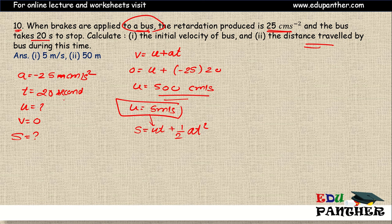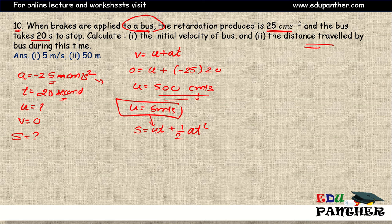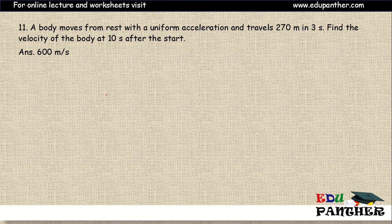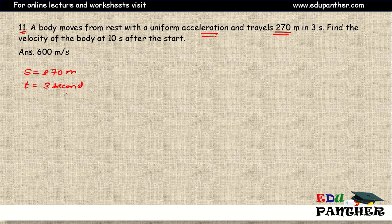For displacement, use s = ut + ½at². We have time 20 seconds and acceleration minus 25 cm/s². If we use acceleration in centimeters per second squared, the velocity will also be in centimeters per second. If we convert acceleration to meters per second squared, then use u as 5 meters per second and the answer will be in meters. Moving on to question 11: a body moves from rest with uniform acceleration and travels 270 meters in 3 seconds. Find the velocity of the body.